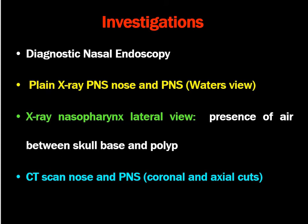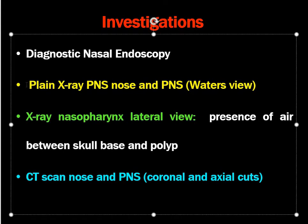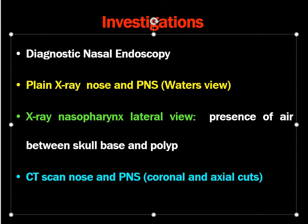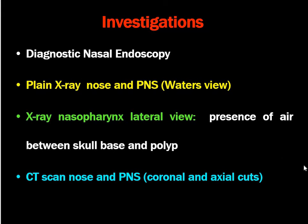Investigations carried out for antrochoanal polyp: they are diagnosed on endoscopy. You can see the mass on plain X-ray of the nose and paranasal sinuses, which is a commonly performed investigation. Nowadays we do CT scan. Sometimes a lateral soft tissue view is used to differentiate antrochoanal polyp from nasopharyngeal angiofibroma. Presence of air between the skull and polyp signifies the mass is antrochoanal polyp only and is not arising from the nasopharynx.